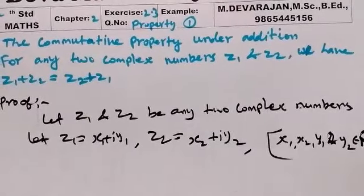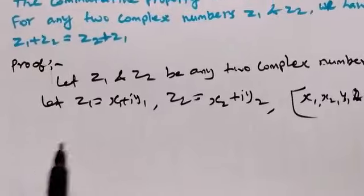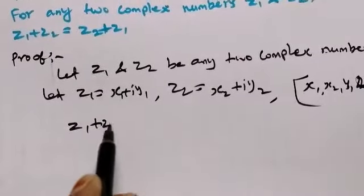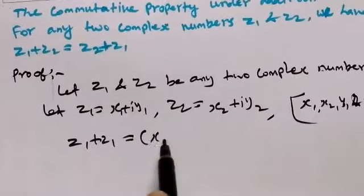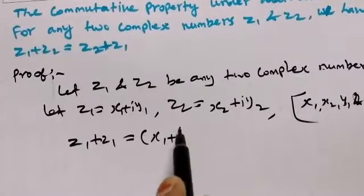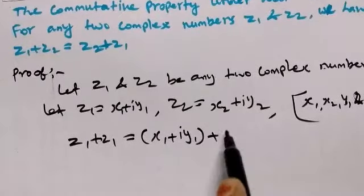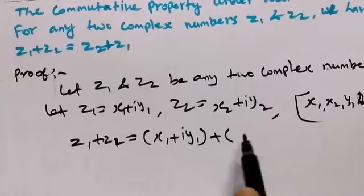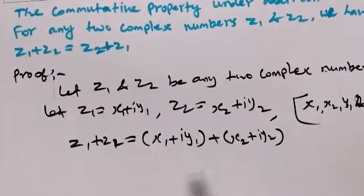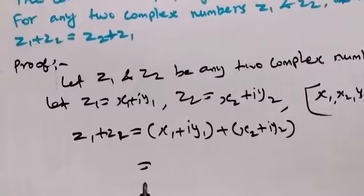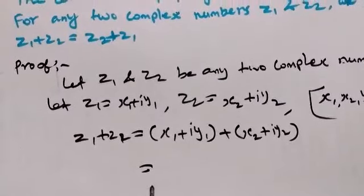Let's calculate the left-hand side. z1 + z2 = (x1 + iy1) + (x2 + iy2). When we add two complex numbers, we group the real and imaginary parts.